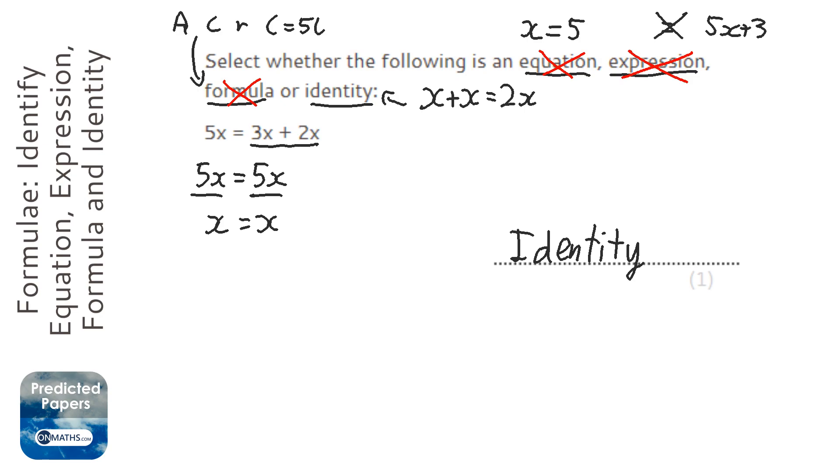Something also to add is an identity is normally shown with three equal signs. So 1, 2, 3, like that. In the exam, it might not show you that, because that's a bit of a giveaway that it's an identity.